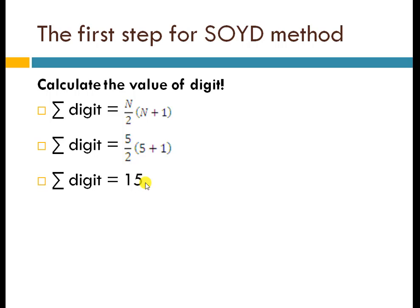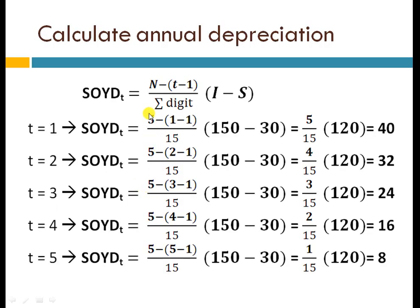The sigma digit is placed as the denominator, since SOYD uses unique fractions. Estimate the sigma digit first before calculating the depreciation each year. In the SOYD formula, you only change the little t. N represents the useful life, I represents the initial investment, S represents the salvage value — if an asset has no salvage value, put zero. The sigma digit is already known, which is 15.